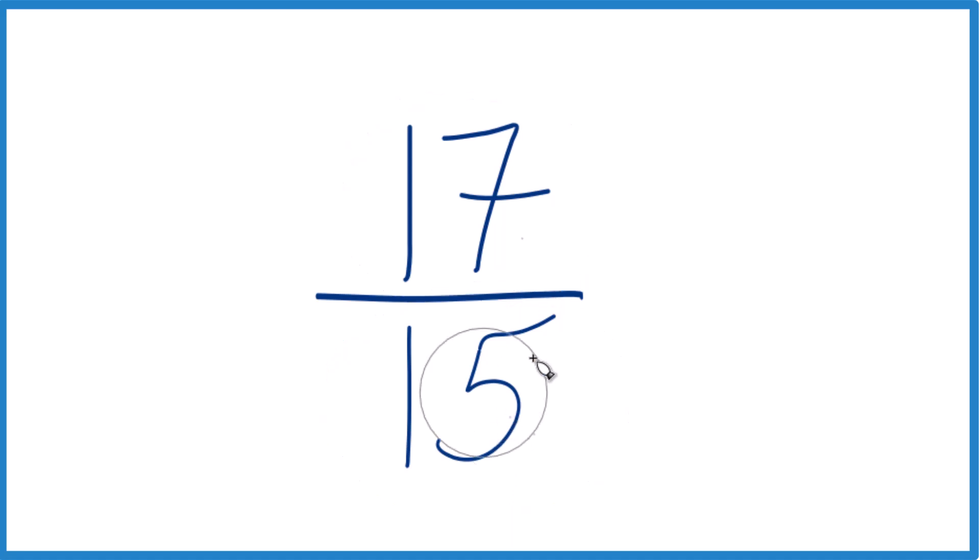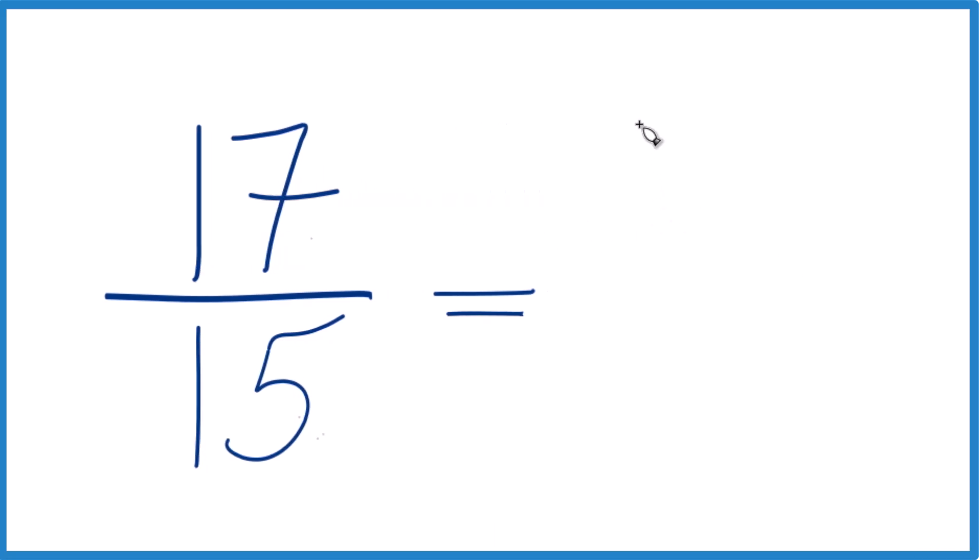So we could convert it to a mixed number. Let's do that. 15 goes into 17 one time. 1 times 15 is 15 with 2 left over.